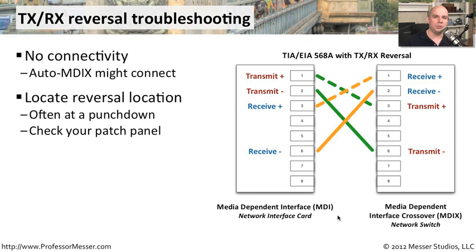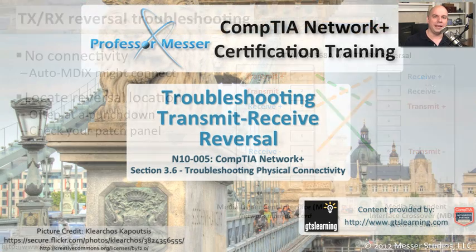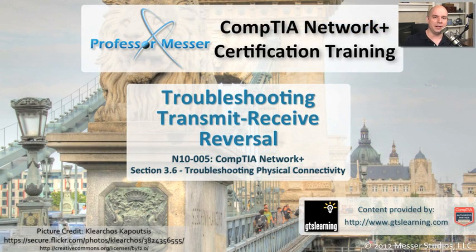Or is there a swap between the transmits and receives? Once you find that, you can change your patch or put a new connector on the end of it to ensure that this type of swapping of transmits and receives does not occur inside of that link.